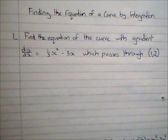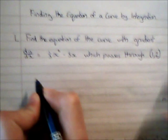So the first thing I'm going to do is find an expression for y, and it's going to be a general equation for a curve with gradient a third x squared minus 3x. So I do this by integrating dy by dx to give me an expression for y.